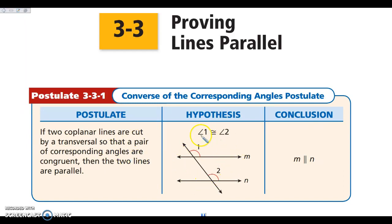If I know that angles 1 and 2 are congruent, then what do I know about lines M and N? I know that those lines are parallel, because they are corresponding angles and they are congruent. So it is the converse of what we did yesterday — the same thing, but in reverse.